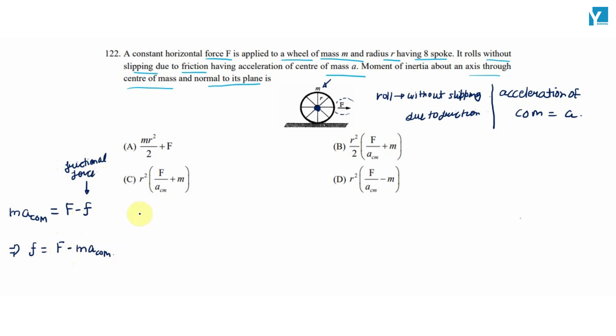Because the wheel is rotating, torque equals I into alpha, which is I into acceleration of center of mass divided by R. So we can write this as force of friction into R equals I into acceleration of center of mass divided by R.